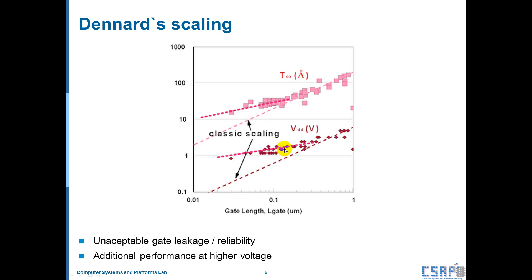In real situation, like this. As you can see this, it violates the Dennard scaling. The scaling relationship is broken because of gate leakage current and reliability. Also, we can get additional performance at higher voltage. This is good effect for us. But previous one is not good for us. So we need to consider this reason.